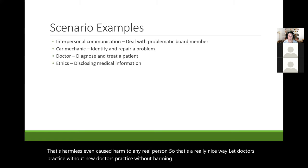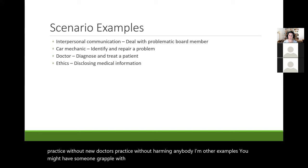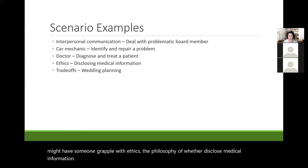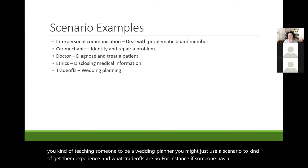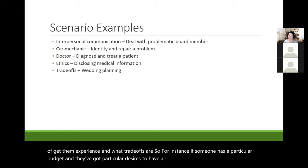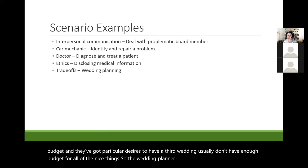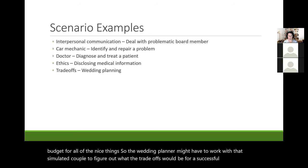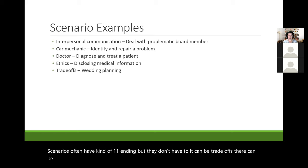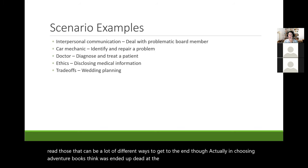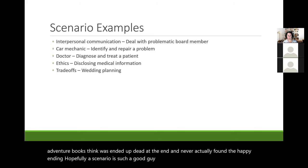Other examples: you might have someone grapple with ethics — the philosophy of whether to disclose medical information. Scenarios can also not have one resolution. For example, in a wedding planning scenario you might use it to get someone experienced in trade-offs: a couple has a particular budget and particular desires, and you usually don't have enough budget for all the nice things, so the wedding planner works with the simulated couple to figure out the trade-offs for a successful wedding. Scenarios often have one ending, but they don't have to — there can be multiple endings, just like a choose-your-own-adventure book.